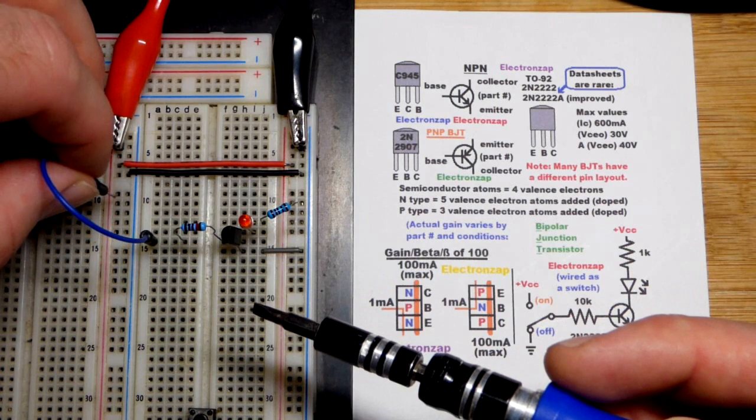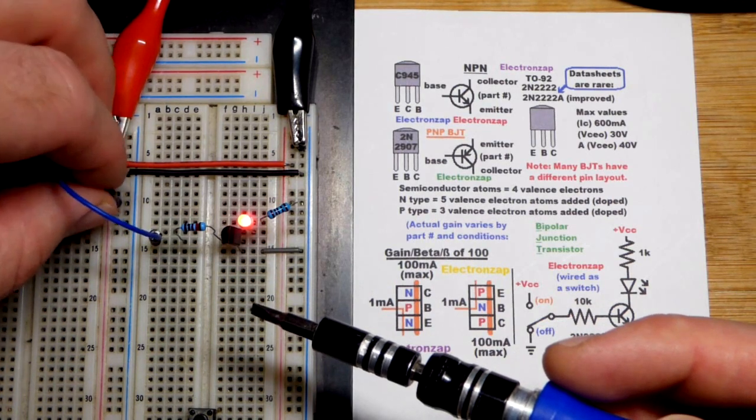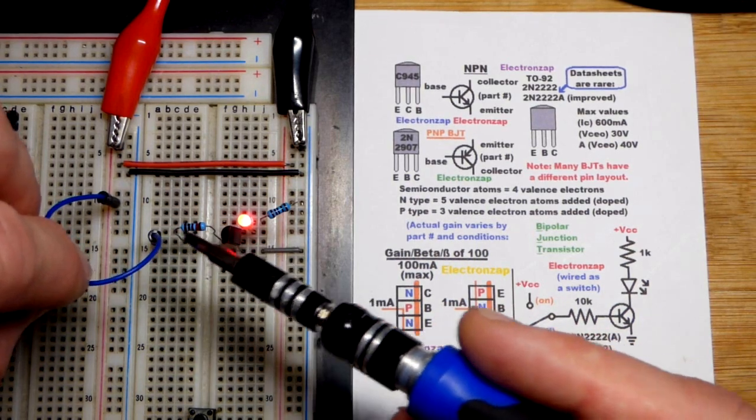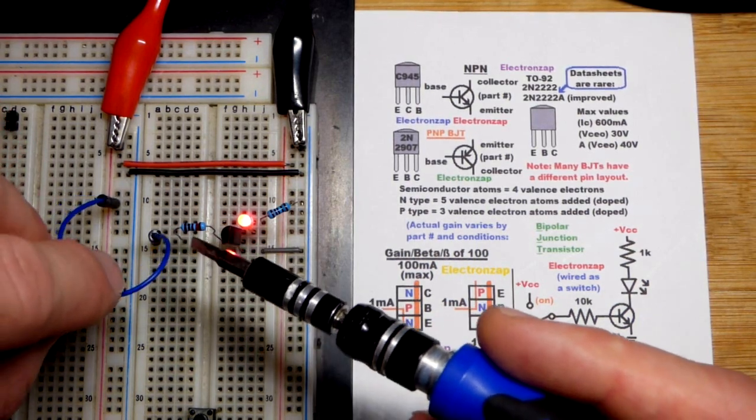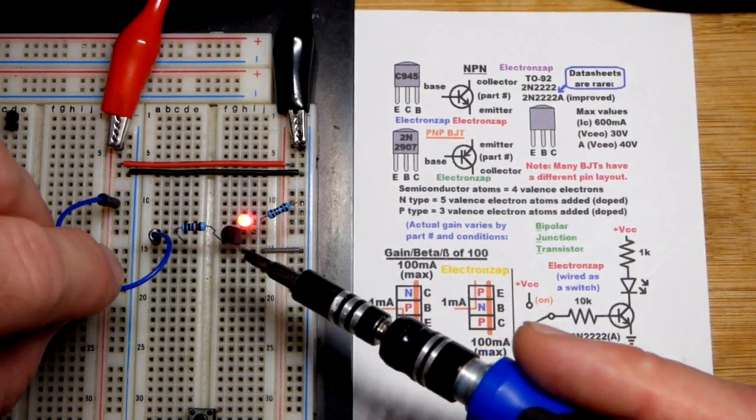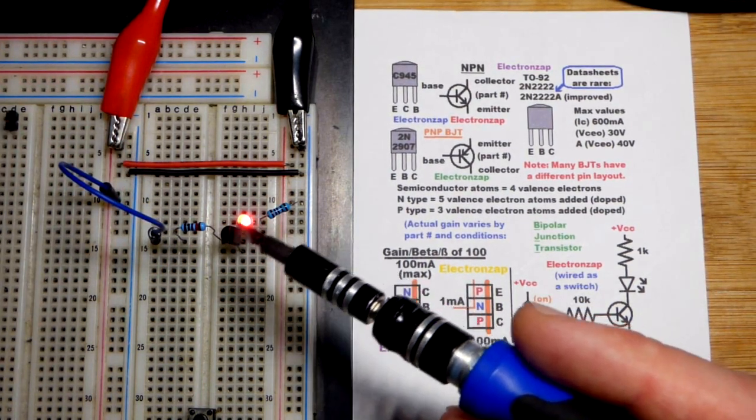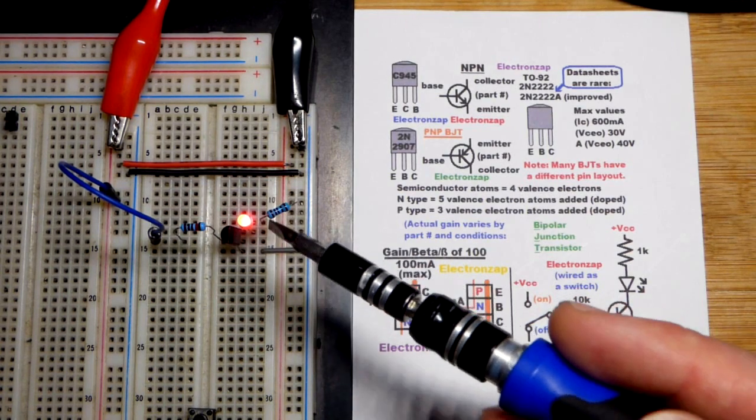That's one of the main properties of a bipolar junction transistor. So we get a little bit of base current. That's a 10,000 ohm resistor right there. And it's putting a little bit of current base to emitter.